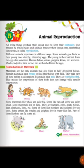Different animals reproduce in different ways. Some animals give birth directly — the young one is born fully mature and fully developed. For example, human beings, cow, sheep, tigers — these give birth to fully developed young ones. Others lay eggs — birds lay eggs and the young one is hatched from the egg after some time.